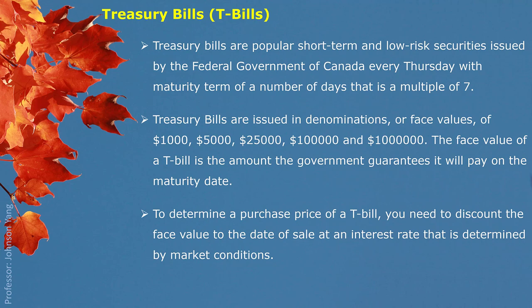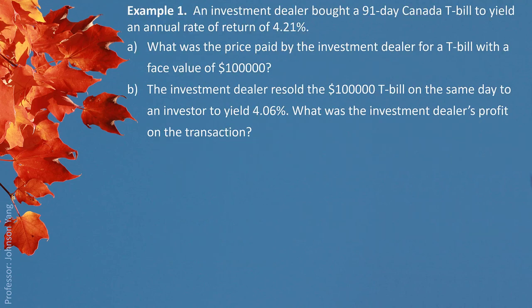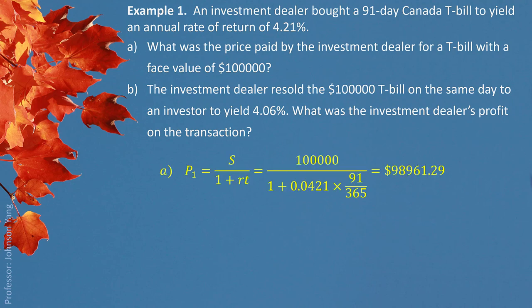Calculating the price of a Treasury Bill is always discounting from the maturity value based on the market interest rate. The price value is always the present value. Example 1: An investment dealer bought a 91-day Canada T-Bill to yield an annual rate of return of 4.21%. Part A: What was the price paid for a Treasury Bill with a face value of $100,000? The price comes out to $98,961.29.